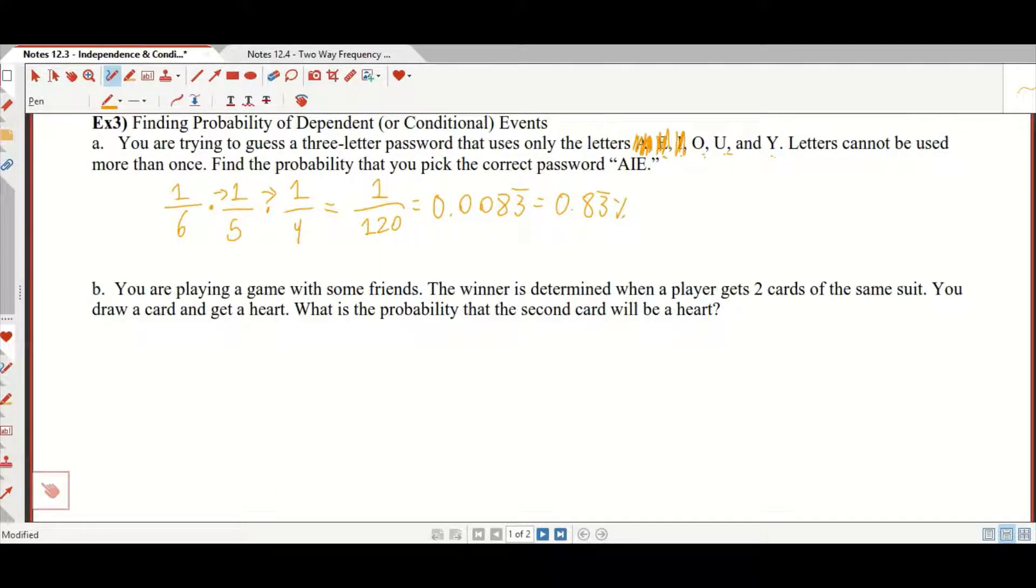So you're playing a game with some friends. The winner is determined when a player gets two cards of the same suit. You draw a card and get a heart. What's the probability that the second card will be a heart? So this is a 52 card deck, I'm assuming. And there are 13 of each suit. So you have a 13 out of 52 chance, which by the way is 1 out of 4 of picking your first heart.